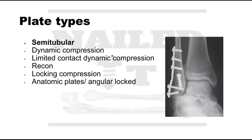A semi-tubular plate — or one-third semi-tubular plate — means if you think of a tube, the plate is just one-third of that tube. These plates are a little more malleable; you can bend them with your hands and fingers, and they're smaller than other plates. They're commonly used to treat ankle fractures or lateral malleolus fractures. Again, it's malleable and represents one-third of a tube.